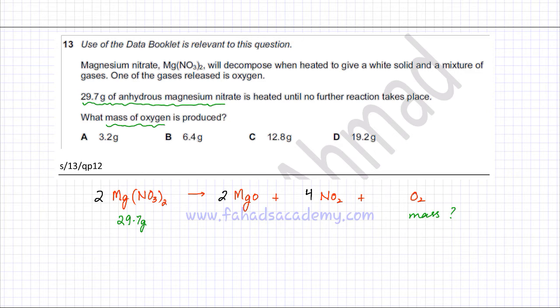The first step we need to do is figure out the moles of magnesium nitrate. Moles of magnesium nitrate would be equal to mass, which is given as 29.7, divided by the MR. For magnesium nitrate it's going to be 24 plus nitrogen is 14 and oxygen is 16. So 16 times 3, that's NO3, and there are two NO3's, so that would be multiplied by 2.